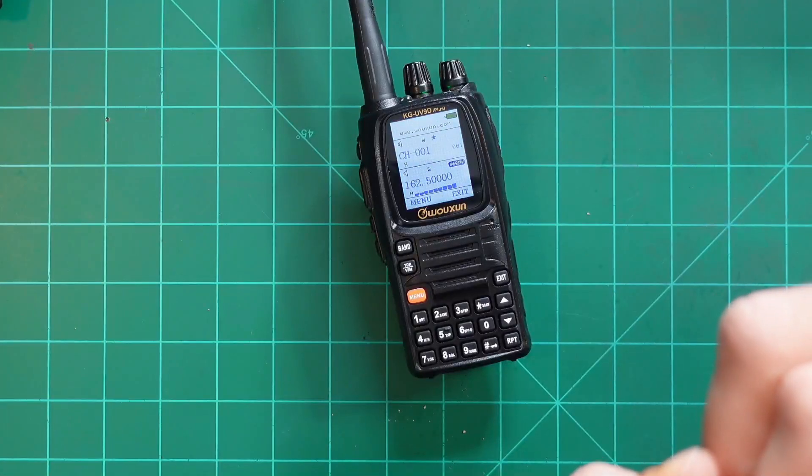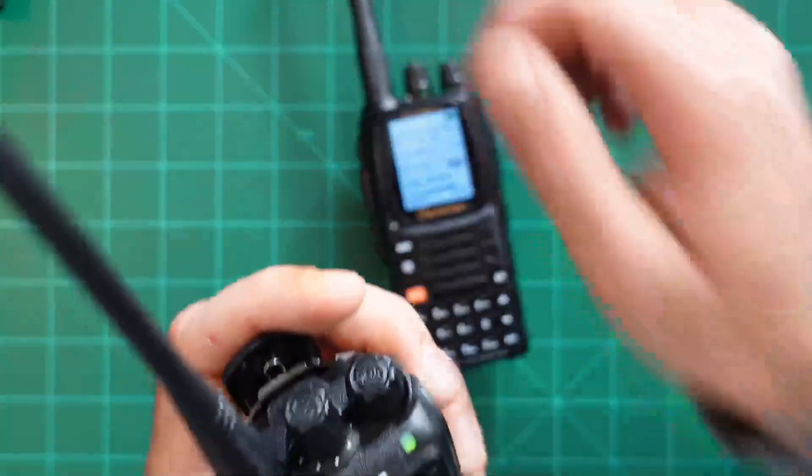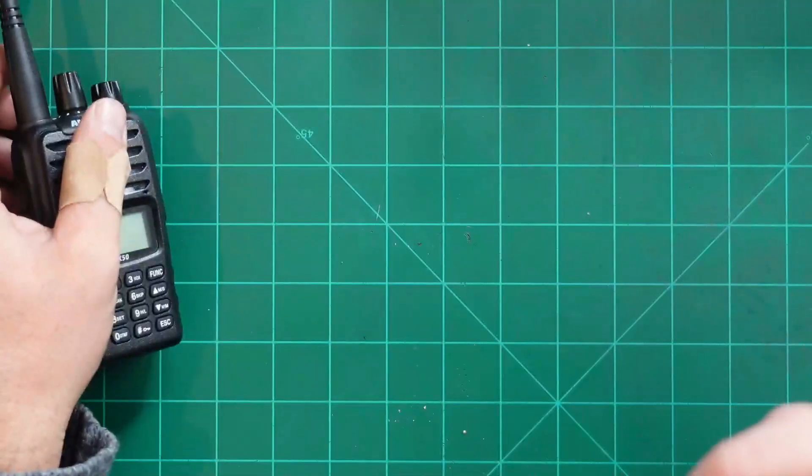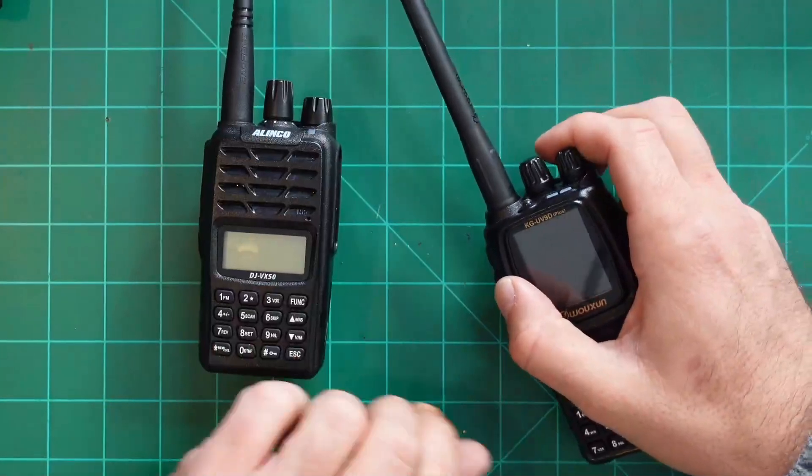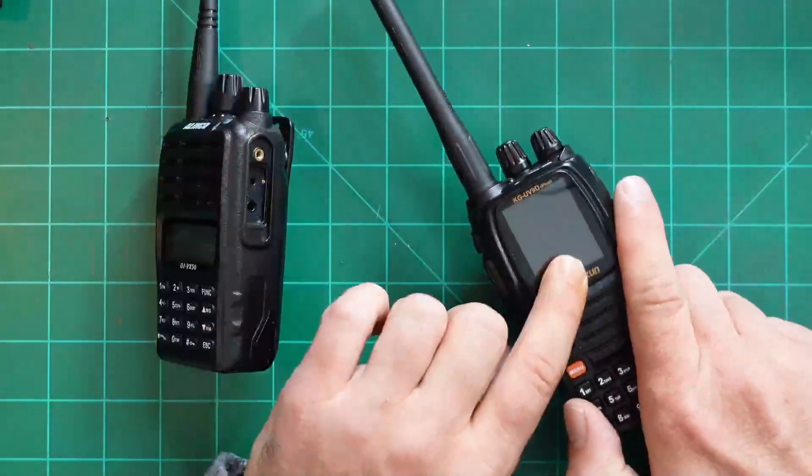Now when you compare that to something like the Alinco DJ VX50, it doesn't sound too good. But the timing, extent, and severity remain uncertain. Persons with interests should closely monitor the latest forecasts. The Alinco DJ VX50, for example, sounds a lot fuller than the signal that you're going to hear on the Wouxun.